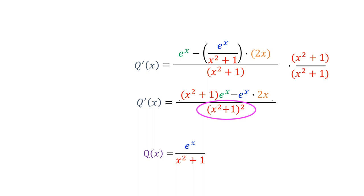And we could have done all this with any quotient. Here is the reasoning a little more generally. Suppose we have a function q of x, which is a quotient of f of x and g of x. We can multiply both sides of the equation by g of x.